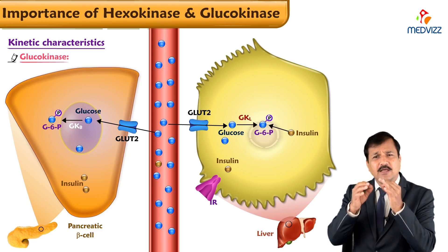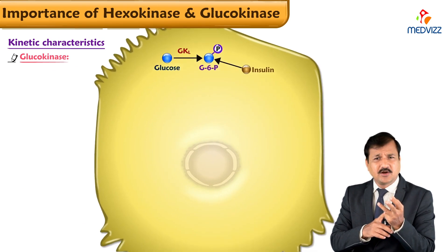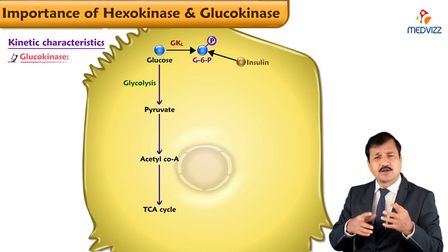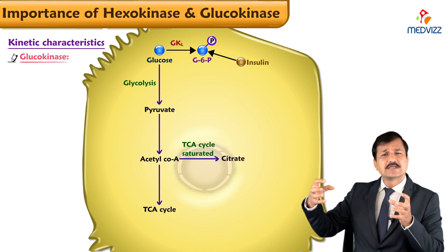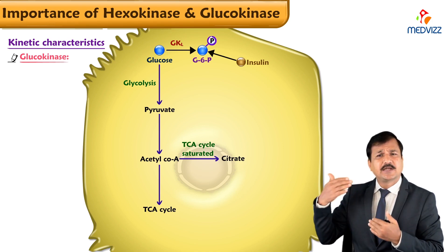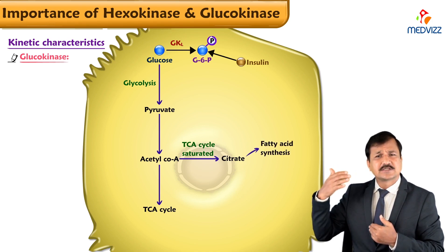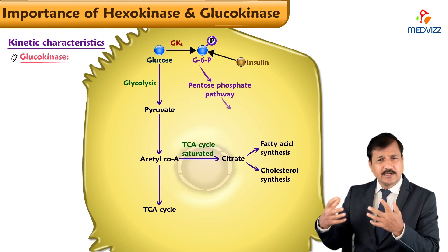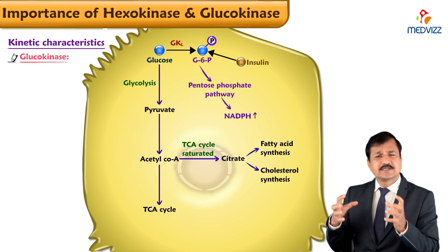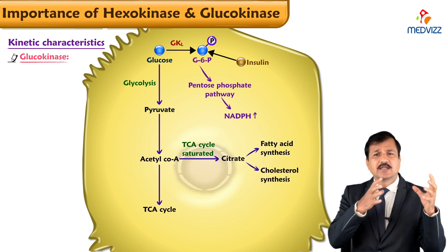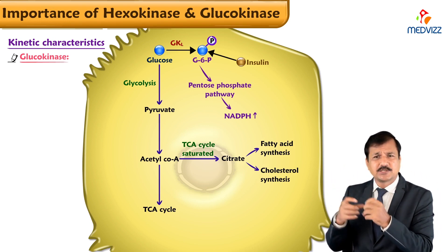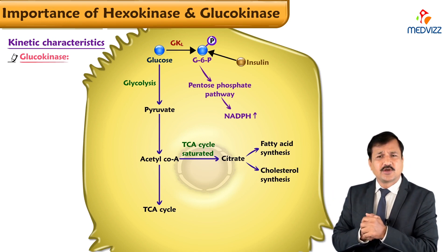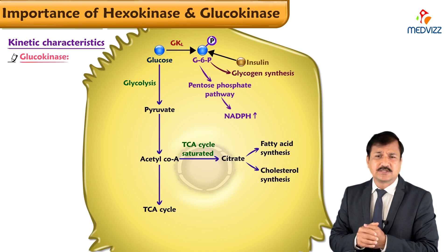Insulin enhances all biosynthetic pathways: it increases glycolysis, converts glucose to pyruvate and then to acetyl-CoA. When the TCA cycle is saturated, citrate exits the mitochondria into the cytoplasm and is diverted into fatty acid synthesis and cholesterol synthesis. Insulin also promotes the pentose phosphate pathway by keeping glucose-6-phosphate dehydrogenase active, generating NADPH necessary for fatty acid and cholesterol synthesis, and also promotes glycogen synthesis.